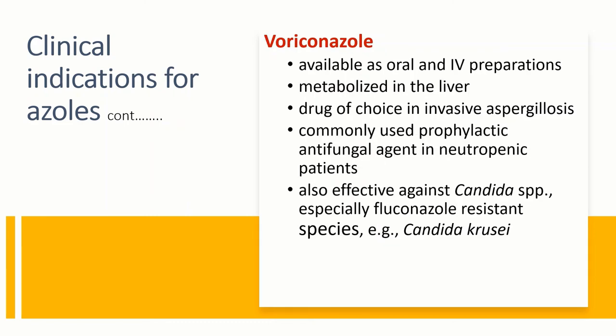Voriconazole is available as oral and IV preparations and is metabolized in the liver. Voriconazole is the drug of choice for invasive aspergillosis, and it is also the most commonly used prophylactic antifungal agent in patients with neutropenia — especially absolute neutropenia where the neutrophil count is below 500 per microliter — as these patients are at risk for environmental fungi such as Aspergillus and Candida.